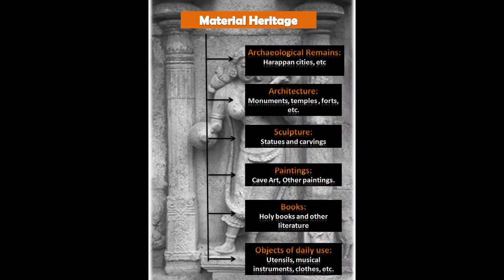Please follow the table given in your book. The table shows you the different types of material heritage. Mainly six types of material heritage are given: 1. Archaeological remains, 2. Architecture, 3. Sculpture, 4. Paintings, 5. Books, 6. Objects of Daily Use.